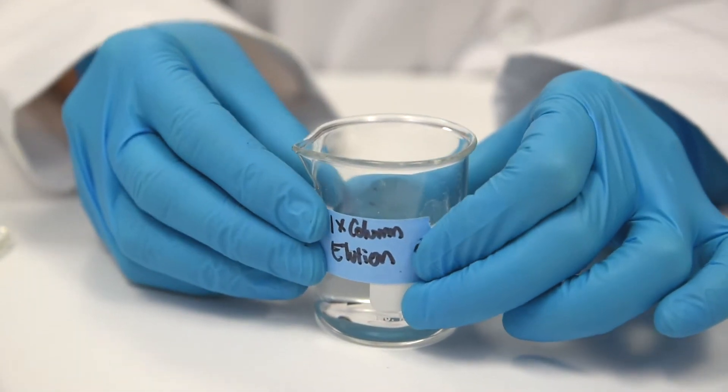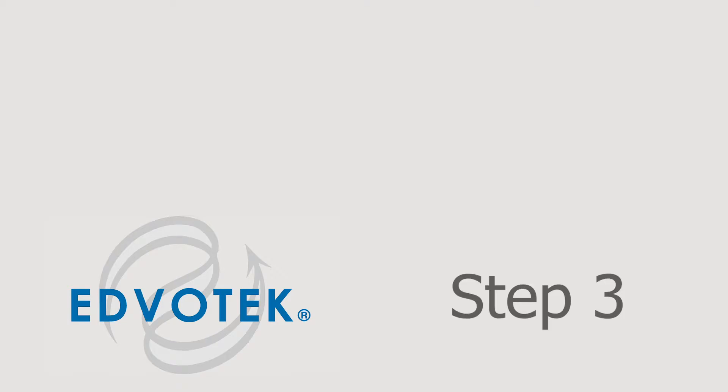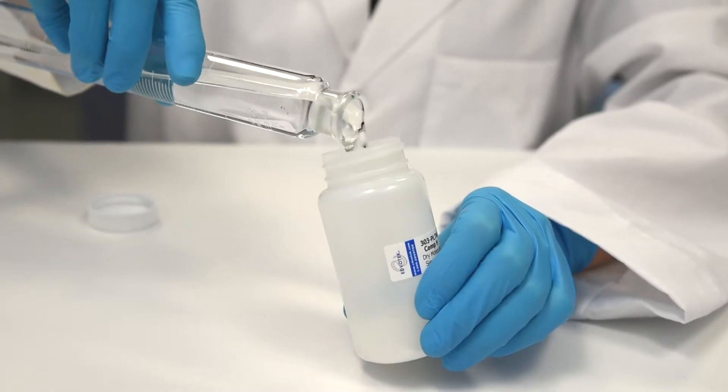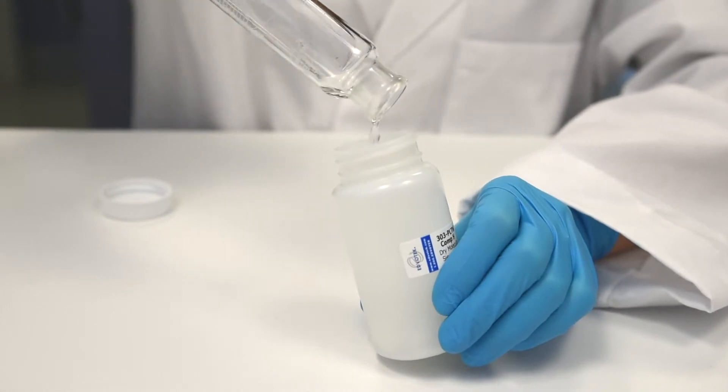Label this buffer 1X Column Illusion Buffer. Preparation of the Molecular Sieve Matrix, Step 3: Add 70ml of the 1X Column Illusion Buffer to the bottle containing the Dry Molecular Sieve Matrix.